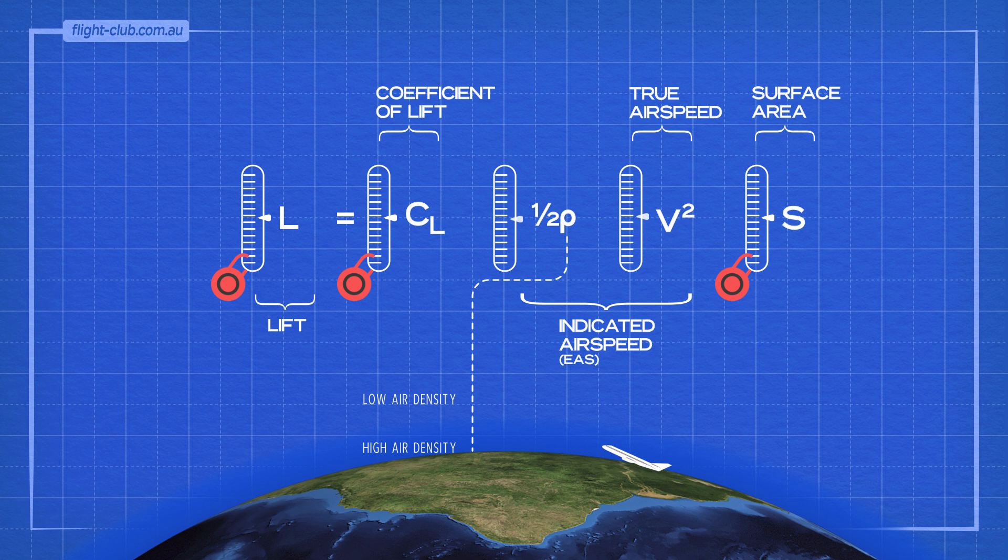As the aeroplane climbs up, the value of rho reduces because the air density reduces. The lift formula must remain balanced. So as rho reduces, the value for true airspeed increases. True airspeed is higher than indicated airspeed.